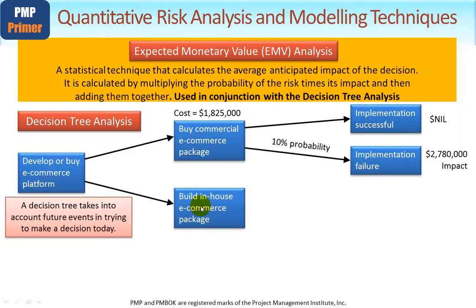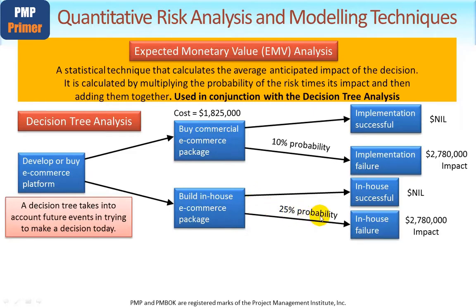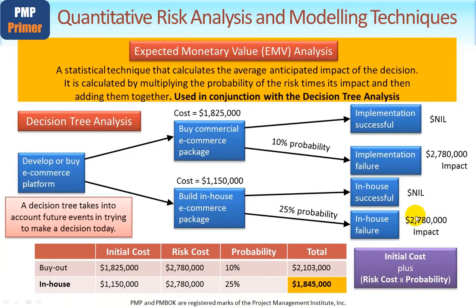Now let's look at the in-house option — if we designed and built it ourselves. If we did it successfully, there'd be no extra risk cost. However, because of the complex nature of this package rather than going to the experts, we believe the probability of us failing is higher — in fact a 25% probability. So there's a 25% probability of us incurring this extra risk cost of $2.78 million. We'd need to put this information in a table and do some simple math. To use EMV, we have to take the initial cost plus the risk cost times probability.